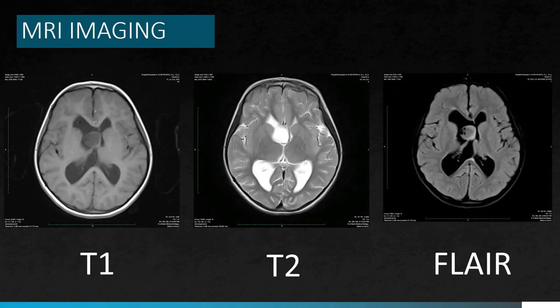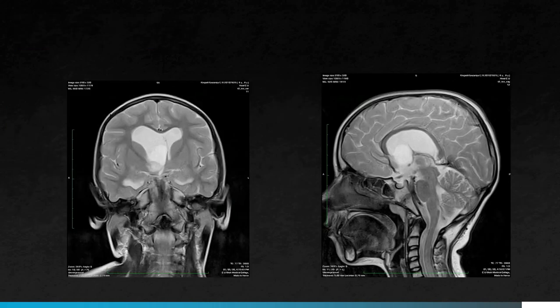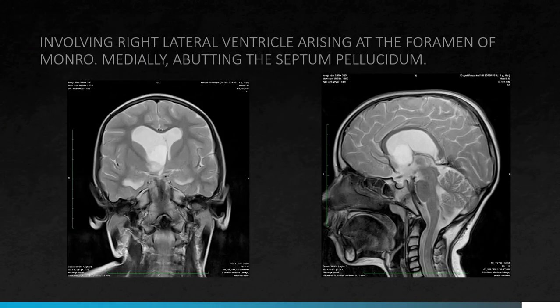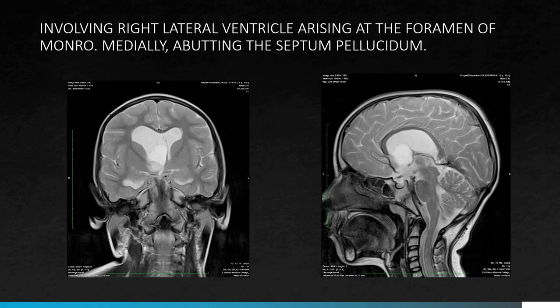MRI brain study revealed an altered signal intensity lesion in the right lateral ventricle which appeared hypo-intense on T1 weighted images, hyper-intense on T2 weighted images, and hypo-intense on FLAIR images. On coronal image, we can see that the lesion is involving the right lateral ventricle arising at the foramen of Monroe.